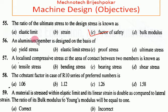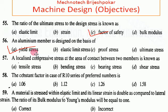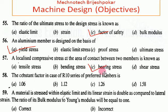Aluminum is a ductile material, so if we apply force it will start to deform. We design on the basis of yield stress. Yield means the material begins to deform when force is applied. A localized compressive stress at the area of contact between two members is called bearing stress.